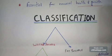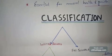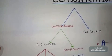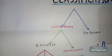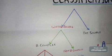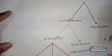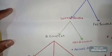Now let's talk about vitamin classification. Vitamins are classified on the basis of solubility, so there are two groups: water-soluble and fat-soluble. Water-soluble vitamins are further divided into two groups: B complex and non-B complex.